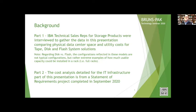For this presentation, I went to a lot of IBM technical sales reps and other equipment manufacturer sales reps and interviewed them to gather the data comparing physical data center space and utility costs for tape, disc, and flash system solutions. Regarding disc and flash, the configurations reflected in these models are not typical — they're extreme examples of the maximum capacity that could be installed in a rack, meaning these are full racks of disc. It's not typical, but it is feasible. Everything in these comparisons is indicative of a full rack. The cost analysis in part two is from a statement of requirements project completed with IBM and Brunspack in September of this year — very current costs.